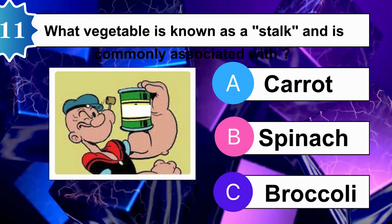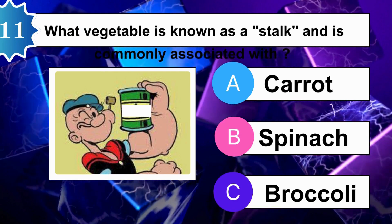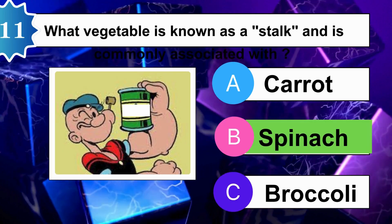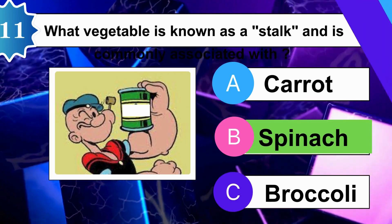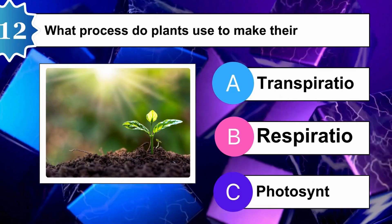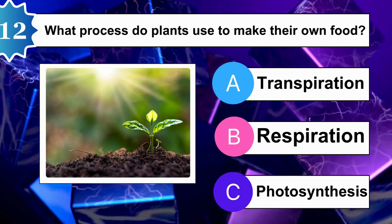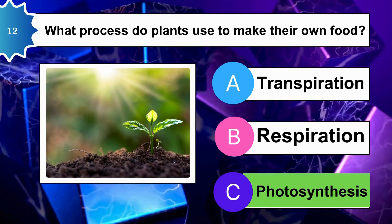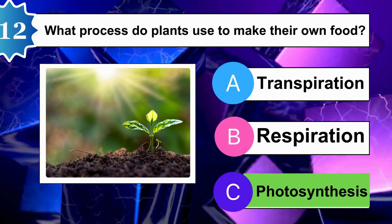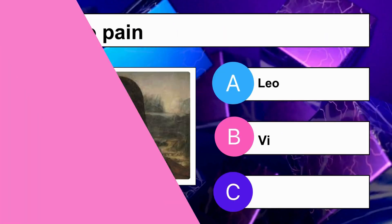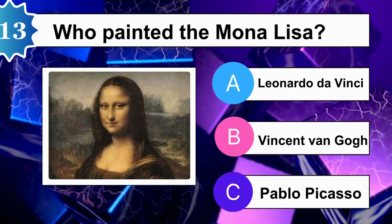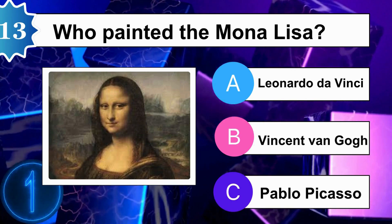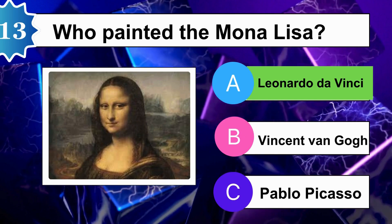What vegetable is known as a stalk and is commonly associated with? B is correct. What process do plants use to make their own food? Who painted the Mona Lisa? A is correct.